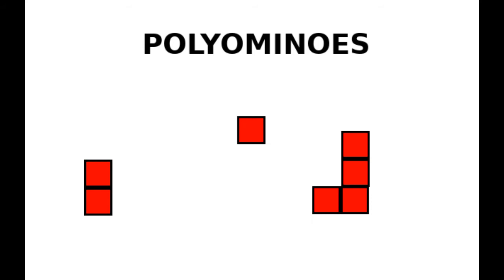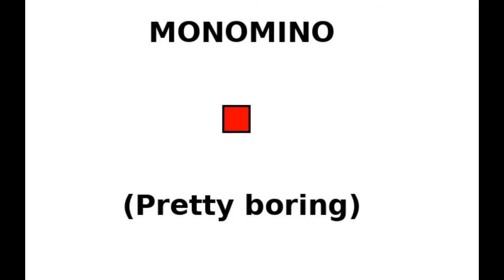Polyominoes are created by adding tiles together. The most famous example of polyominoes are tetris pieces, which are the seven pieces that can be formed from four tiles. The simplest polyomino is the monomino, a single square. Nothing to see here, so let's move along.